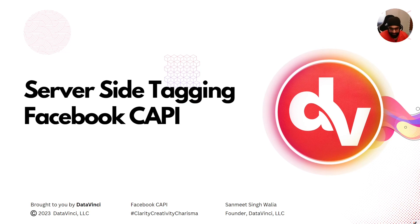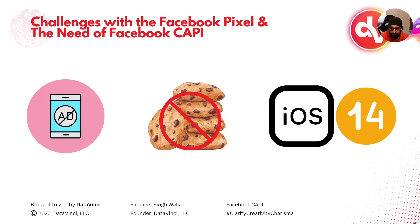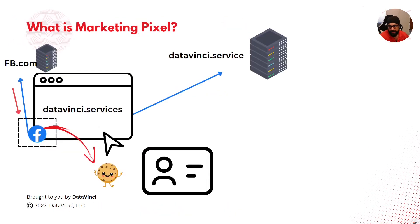I am creating these videos to generate awareness about our agency and seeking potential business opportunities — can't get more honest than that. So, challenges with Facebook Pixel and the need for Facebook Conversion API or server-side tagging in general: ad blockers, cookie blockers, and all the releases around iOS privacy and tracking after iOS 14 have affected the way the pixel can work and how it is able to track and identify people.